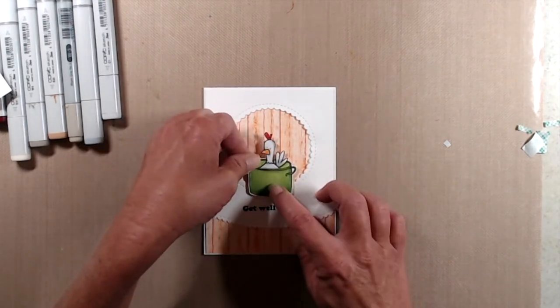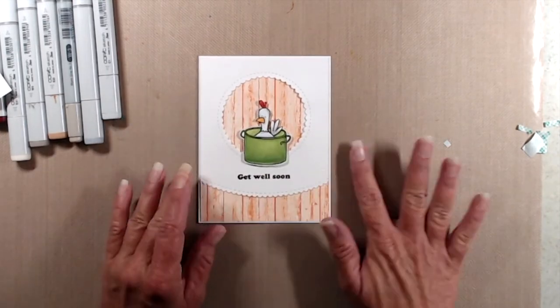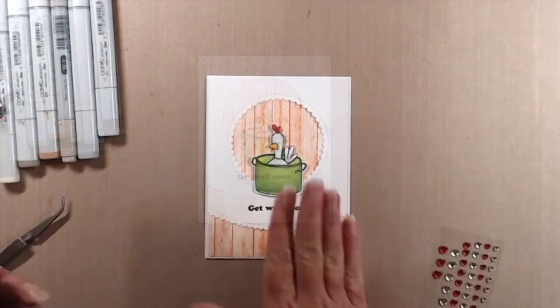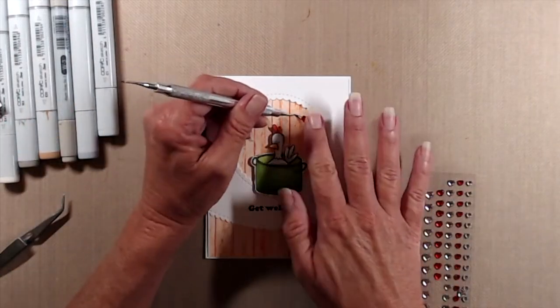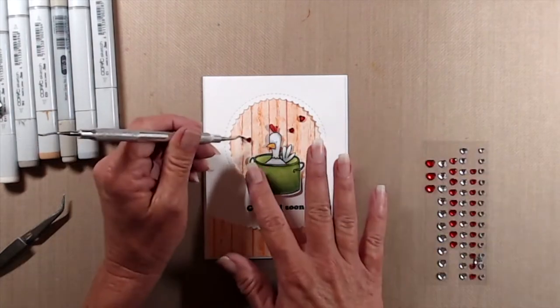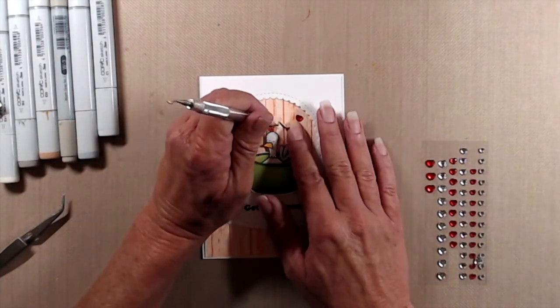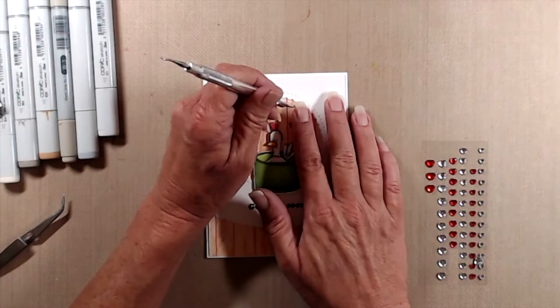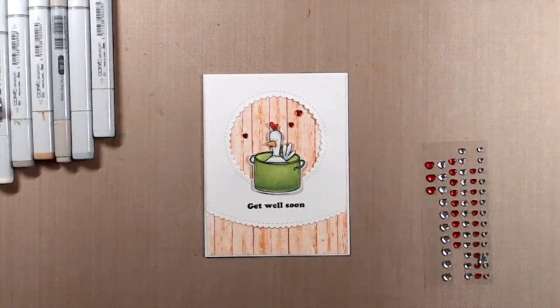To finish it up I added a couple of red jeweled hearts around the chicken and then off screen I decided to add the word soup to the stock pot so I stamped that also using my VersaFine onyx black ink and that finishes up my second card.